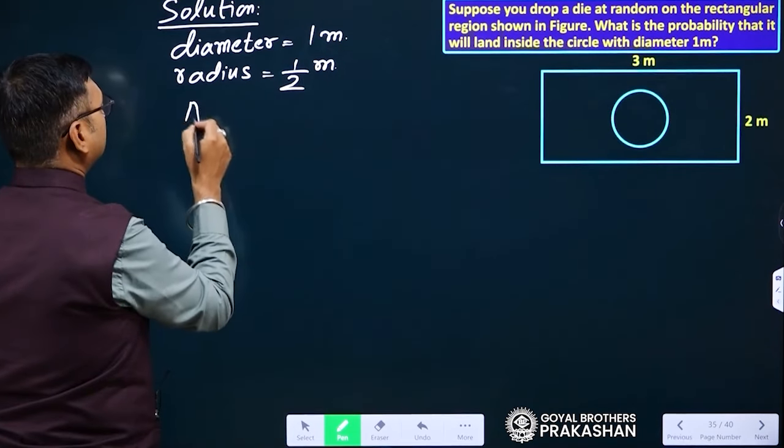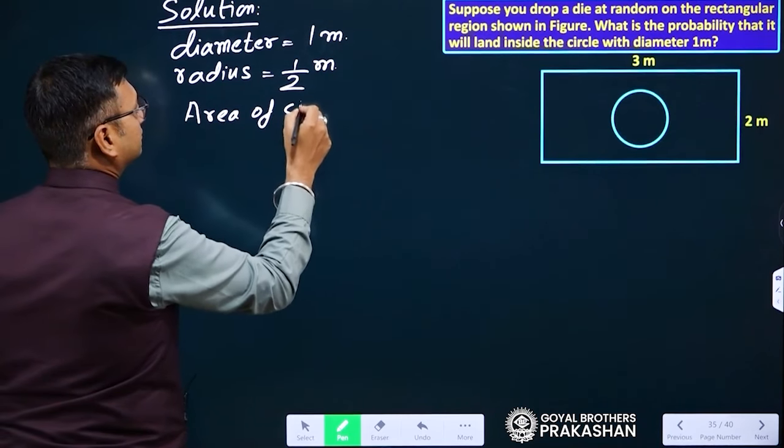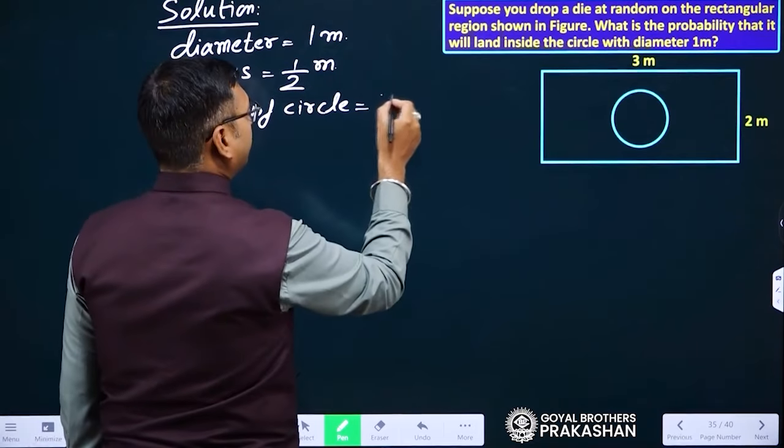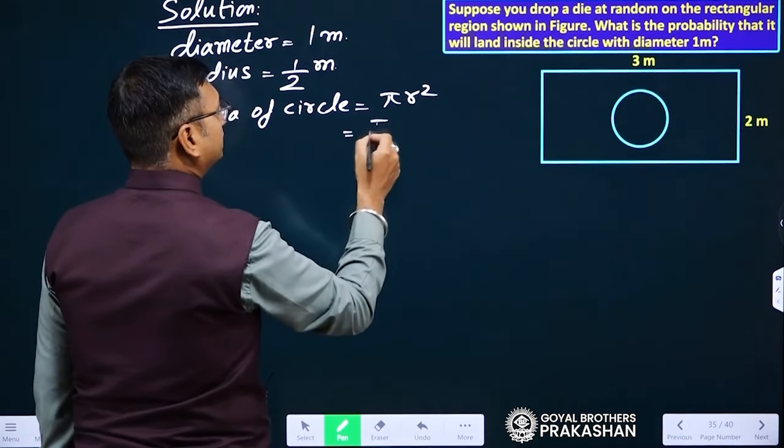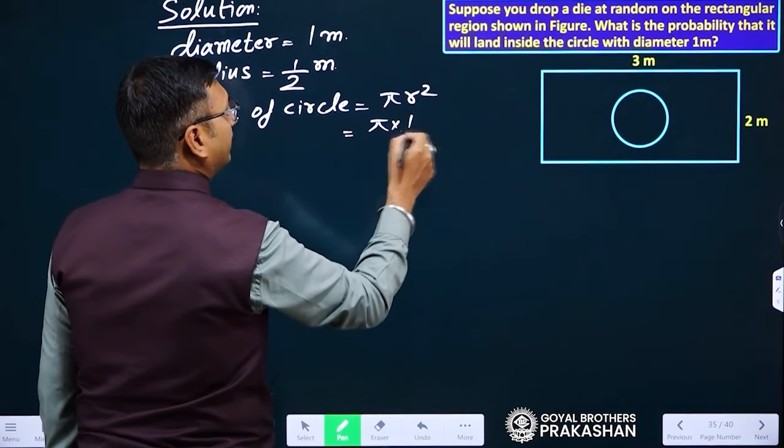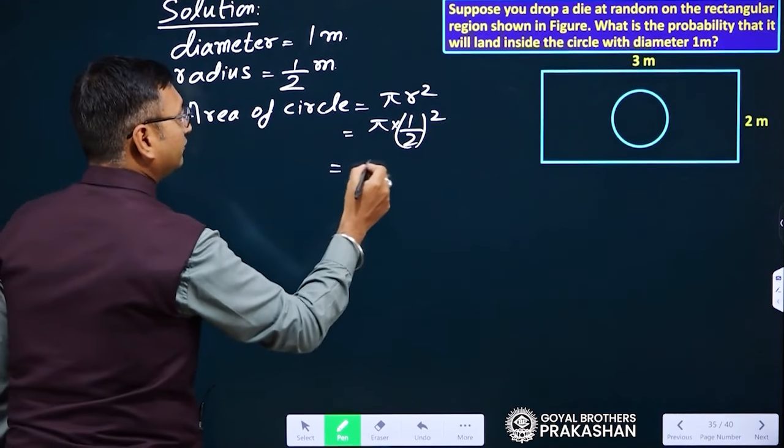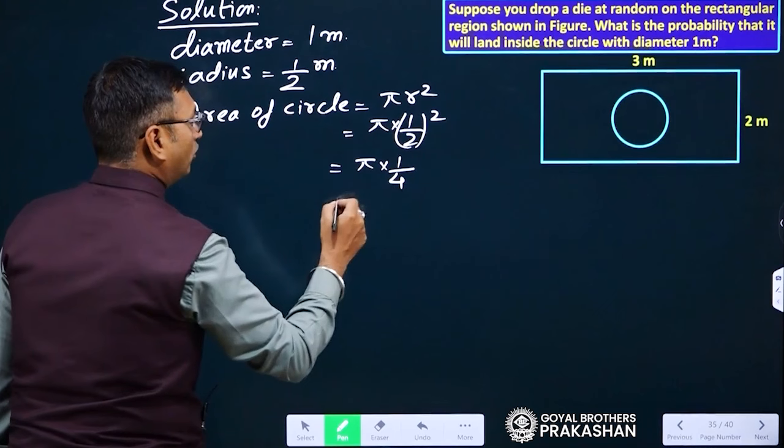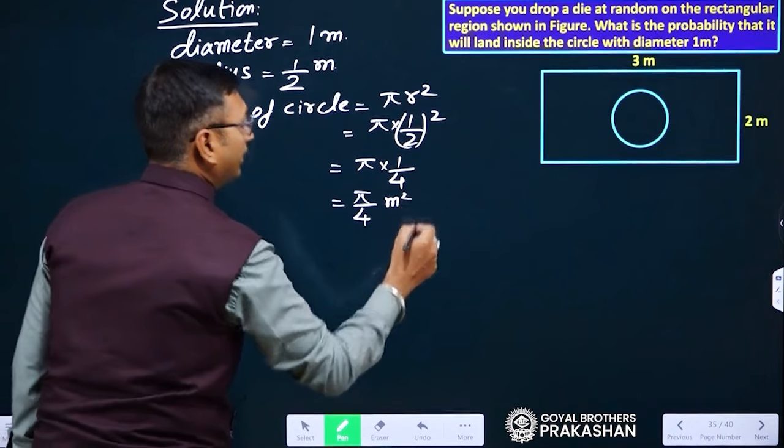Area of circle - what is the formula of area of circle? Yes, exactly, pi r square. If we put r is 1 by 2 square and if we solve this part, we will get pi multiply with 1 by 4, or you can say pi by 4 meter square.